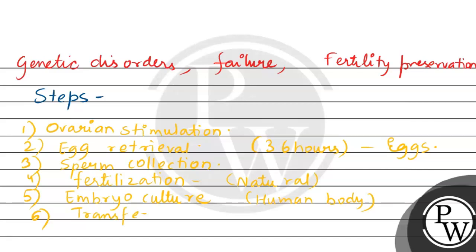Next is embryo transfer. The selected embryos are transferred into the woman's uterus using a thin catheter. After the transfer, the seventh step is luteal phase support, where the woman is given medication, usually progesterone, to support the uterine lining and help maintain the pregnancy.